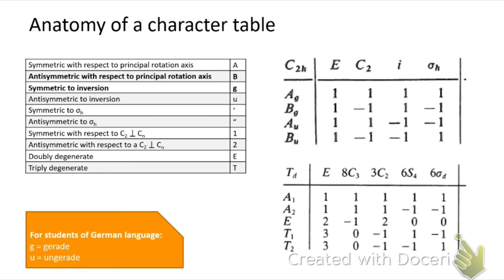The irreducible representations have labels like Ag, Bg, Au, and so forth, and those labels actually mean something. There's a table showing the meaning of those different symbols. For example, A's are all symmetric with respect to the principal rotation axis.